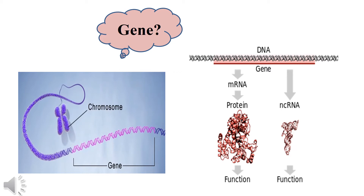Before going into the details of this topic, we must recall what genes are. Genes are the part of chromosomes which perform a specific function. Genes are designed to be transcribed into messenger RNA, and the messenger RNA is translated into a functional protein, which shows whatever function it is designed to perform. If the gene is for non-coding RNA, then it will transcribe into non-coding functional RNA.